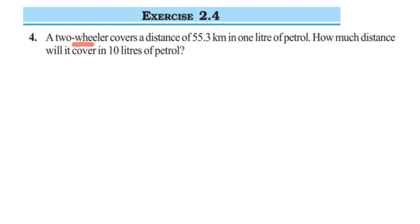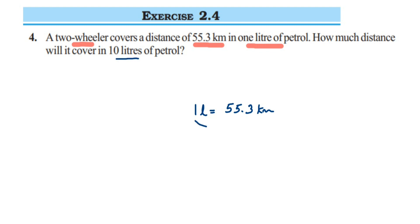What we are given is that a two-wheeler, like a bike, covers 55.3 kilometers in one liter of petrol. So if you add one liter of petrol in a two-wheeler, it will cover 55.3 kilometers distance. The question asks: for 10 liters of petrol, how much distance will it cover?